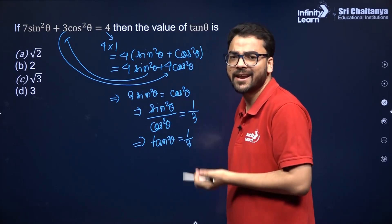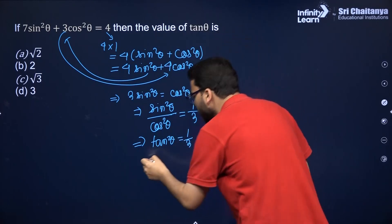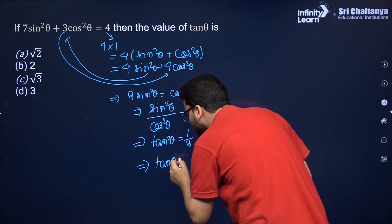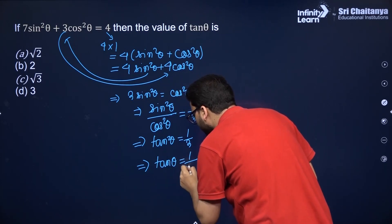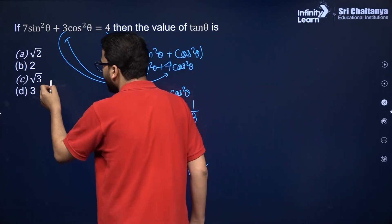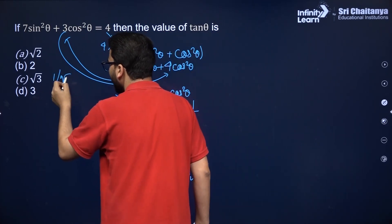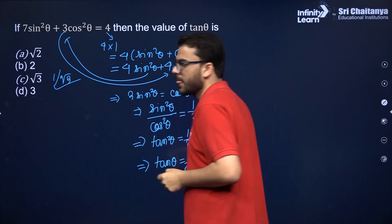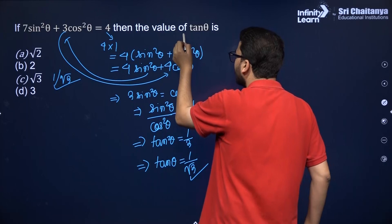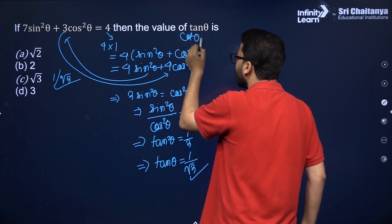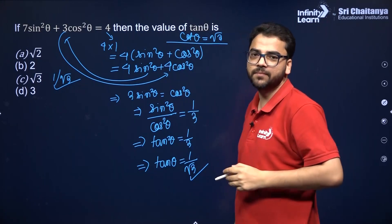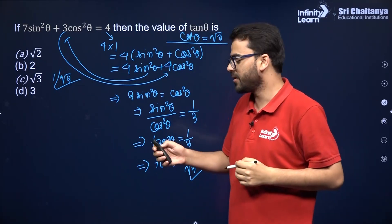Taking the square root — in grade 10 trigonometry we neglect the negative value — so tan θ = 1/√3. There is a formatting mistake in the question; the correct answer is 1/√3. If cot θ were asked instead, the answer would be √3.